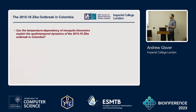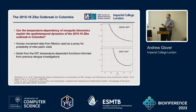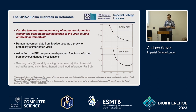In the context of the 2015-16 Zika outbreak in Colombia, my overarching research question was: can the temperature dependency of mosquito bio-bionomics explain the spatiotemporal dynamics of the 2015 Zika outbreak? I account for human movement data from Mexico as a proxy for the probability of interpatch visits. Many functional forms were informed by previous investigations with dengue, apart from the extrinsic incubation period (EIP) — the time between when a mosquito becomes infected and becomes infectious — which is much longer at lower temperatures for Zika. In the model fitting process, I was fitting the seeding date and a scaling parameter nu that scales the reproductive number.